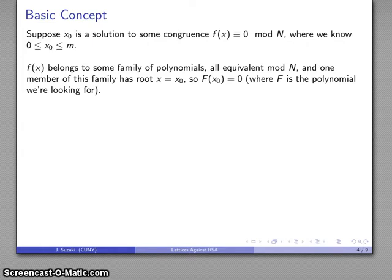Now, the idea here is that F of X belongs to some family of polynomials all equivalent mod N, and one of these families, one of the members of this family, will have a root, X equals X zero, that's a root in the equality, so that F of X zero equals 0, where F is the polynomial we're actually looking for. And note that this is an equality here, which corresponds to a particular congruence mod N.